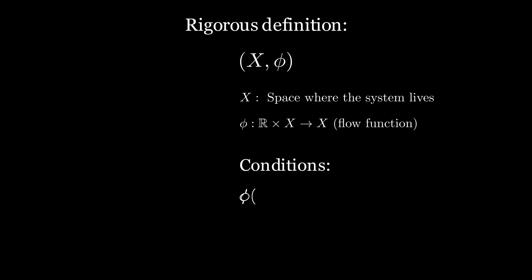Here is the rigorous definition of what a dynamical system is. A dynamical system is a tuple x and phi, where x is the space which what you are analyzing lives. And phi is the flow function, which is from the Cartesian product of r and x to x. And the dynamical system has these conditions. The first one is that phi of 0 and x equals to x. And the second one is that phi of t plus s and x equals to phi of t and phi of s and x. Let me elaborate.